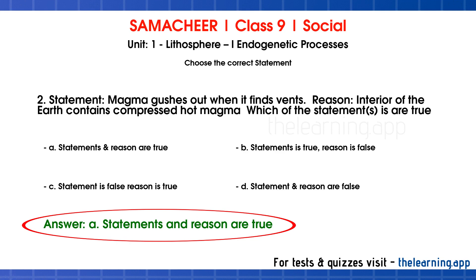In the mantle, magma is very hot molten liquid rock. The mantle contains magma. When the hot magma finds an opening, it gushes out through that opening. So both the statement and the reason are true.